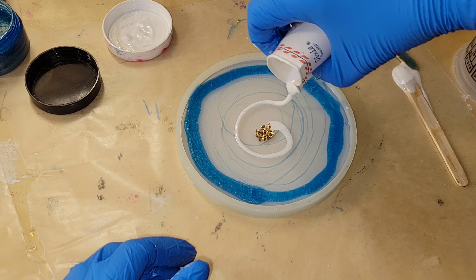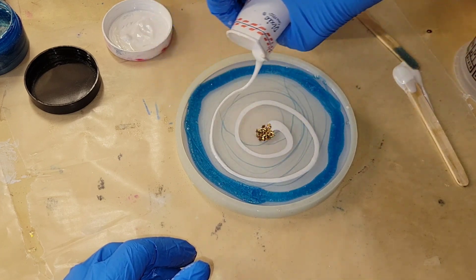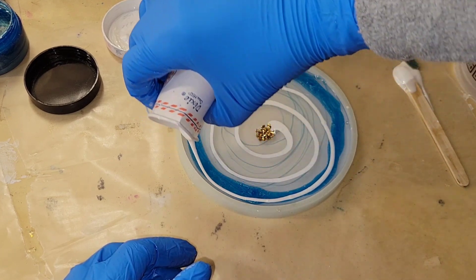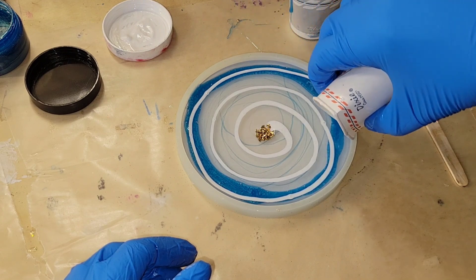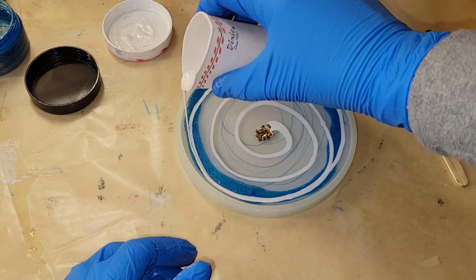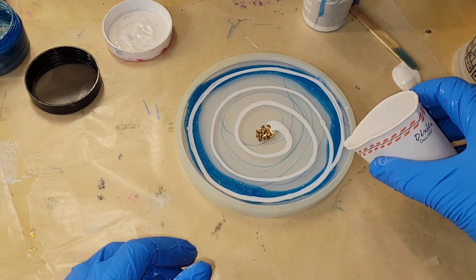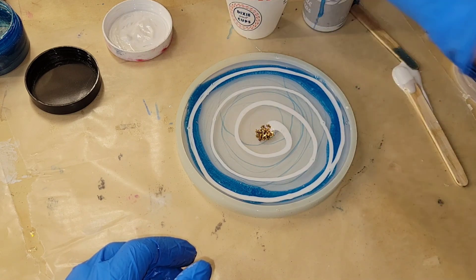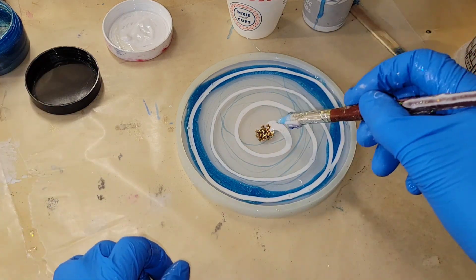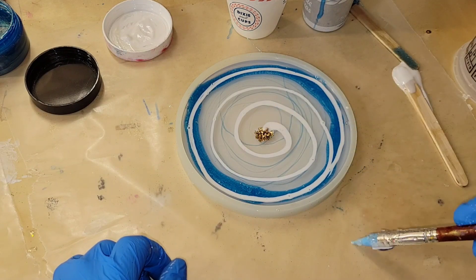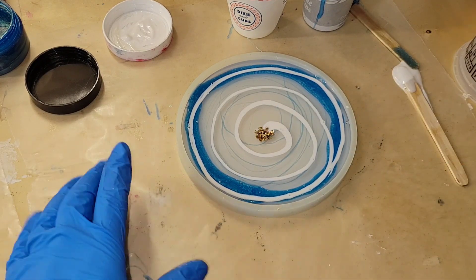I went ahead and filled up my mold off camera. I have this mold about halfway full with clear resin. I'm using the Total Boat Tabletop Epoxy. I went in with that Aqua Gold just around the perimeter of the mold and did a few swirls towards the center as well.